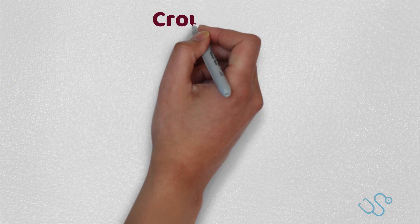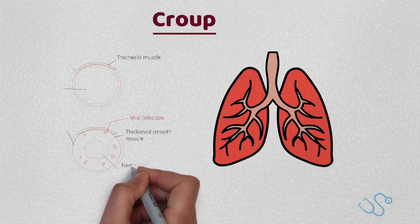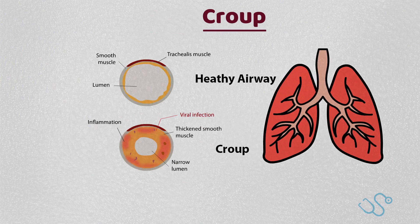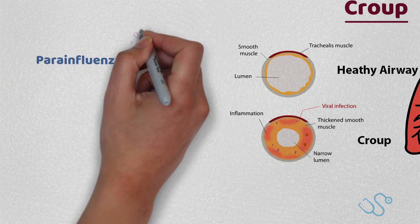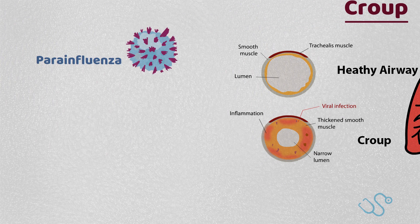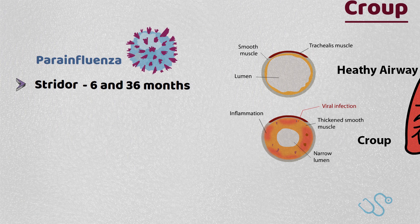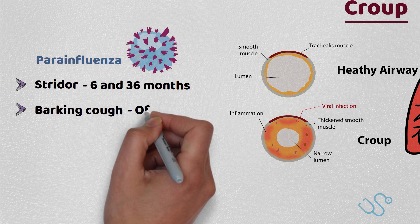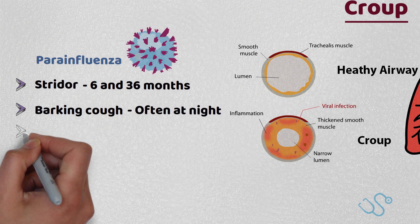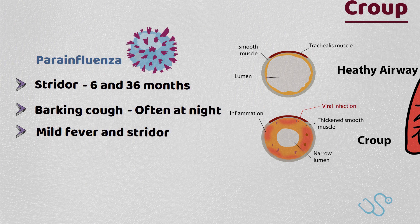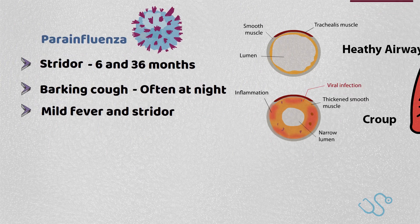Croup is a common viral respiratory tract infection caused by the parainfluenza virus, which often causes a stridor-like sensation in children between 6 and 36 months. This often presents as a classic barking cough, often at night with mild fever and stridor. NICE stratifies this into mild, moderate and severe symptoms.